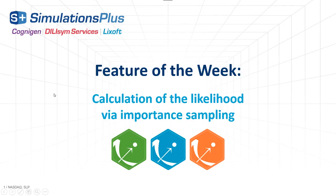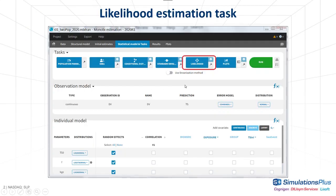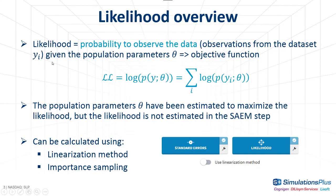Hi everyone, today I will explain one of the algorithms behind the calculation of the likelihood in Monolix. The likelihood estimation task corresponds to this button in the graphical user interface. As a reminder, the likelihood is the probability to observe the data, so the observations present in the dataset, given the estimated population parameters.